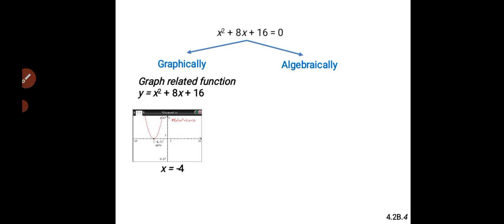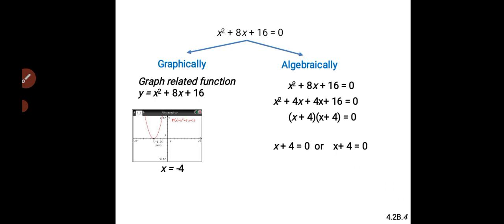For example, X squared plus 8X plus 16 equals zero. We think of the numbers that if multiplied give 16 and if added give 8. Those are 4 and 4: 4 times 4 is 16, and 4X plus 4X gives 8X. We replace 8X with 4X plus 4X, then factor to get X plus 4 times X plus 4 equals zero, giving two equal real number roots of X equals minus 4.